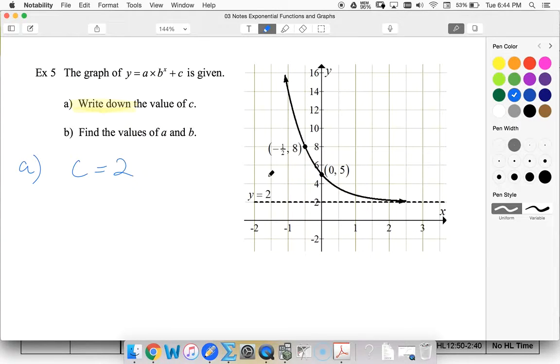Finding a and b, I'm going to start with my easiest point of 0, 5. So using (0, 5), we get that 5 is equal to a times b to the 0 plus 2. b to the 0, of course, is 1. Move the 2 to the other side. We get that a is 3.